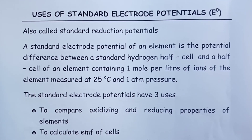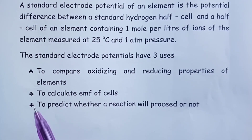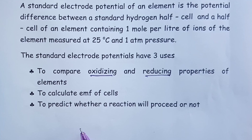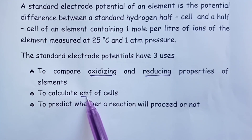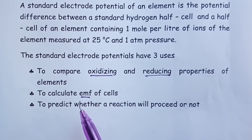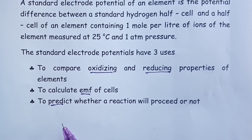Standard electrode potentials have three uses. First, we use them to compare oxidizing and reducing properties of elements. Second, we use them to calculate the electromotive force of cells when two half cells are connected to form a complete cell. And lastly, we use them to predict whether a reaction will proceed or not.